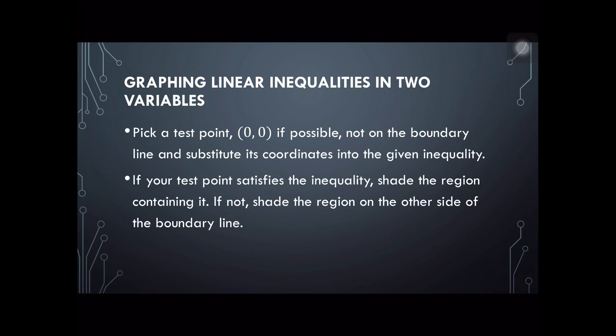Let's now move to the next step. This time we have to pick a test point that is not on the boundary line. Definitely we can have any test point, but I'd advise that the easiest point that we'll be using would be the origin, or (0, 0). The (0, 0) will be substituted as coordinates in the given inequality.